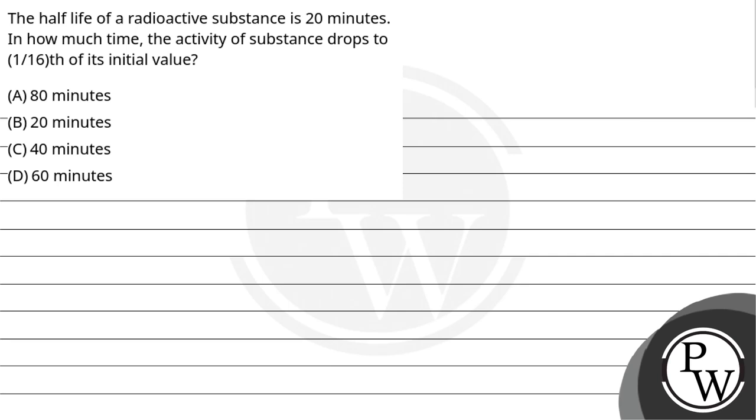Now let's read the question. The half-life of a radioactive substance is 20 minutes. In how much time does the activity of the substance drop to 1/16th of its initial value? Option A: 80 minutes, Option B: 20 minutes, Option C: 40 minutes, and Option D: 60 minutes. So our key concept is